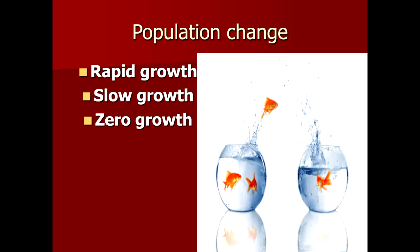Slow growth is shown by countries where the birth rate is low but the death rate is also low, because of prevailing health conditions and better healthcare service provision. The slow birth rate indicates the provision of family planning services and awareness of family planning methods. Zero growth shows that births are equalizing the number of deaths.